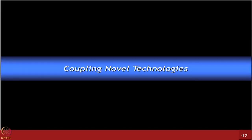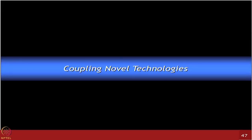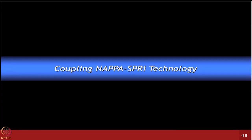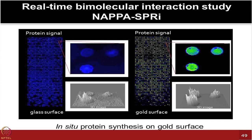As you would have realized from various lectures, there is great need for integration and development of new technologies by coupling different existing platforms. In Josh's lab, work was done on coupling NAPA technology with SPRI (SPR imaging) platforms. Initial experiments by Manuel Funtis around 2006–2008 showed that glass slides gave certain signals while the same features printed on a gold slide showed much more intense signals, raising the question of whether the NAPA concept could work on gold.